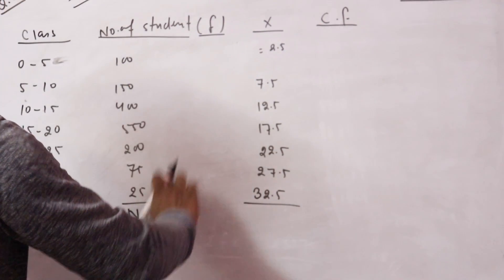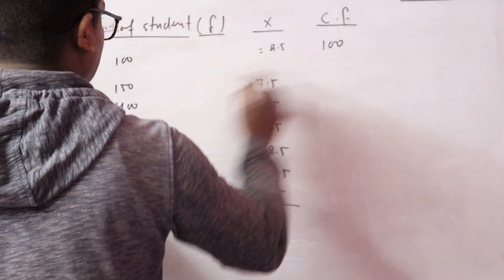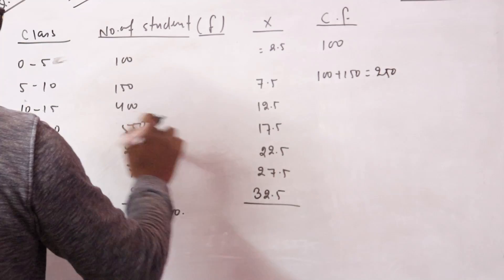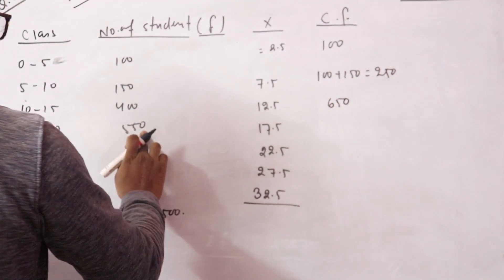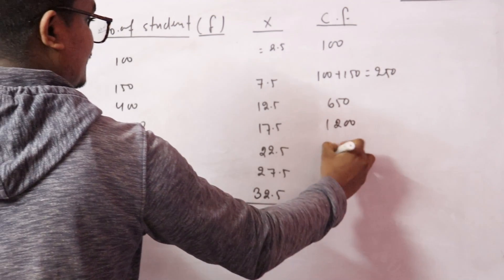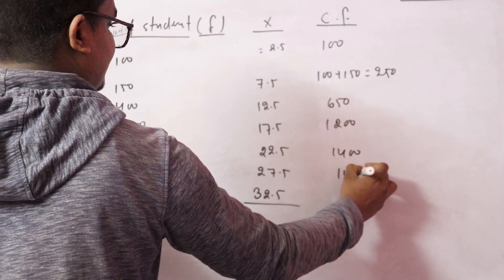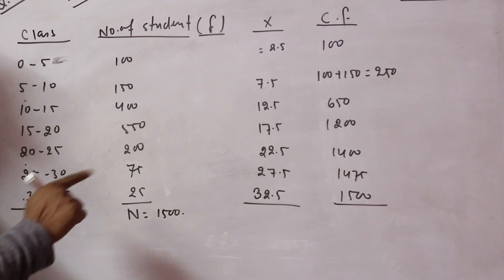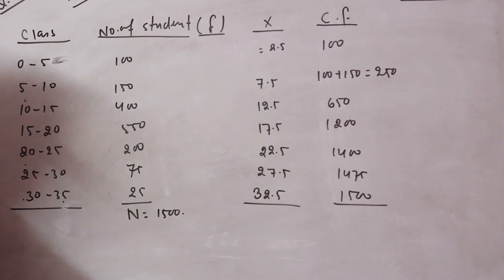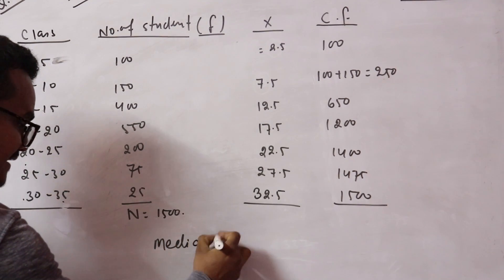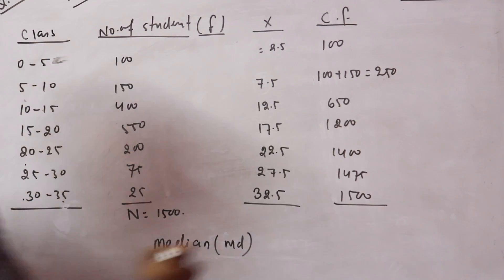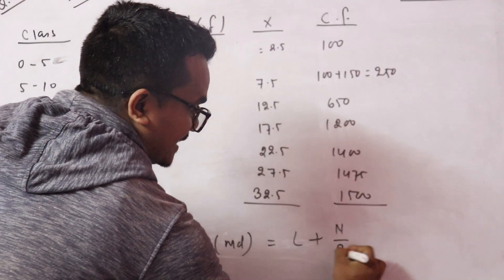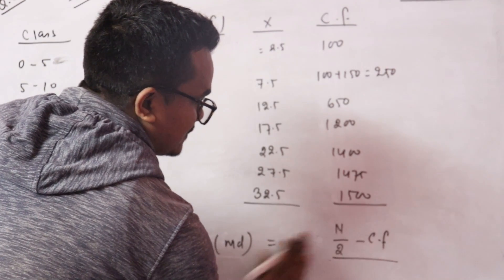CF means cumulative frequency, so we add: 100 first; 100 + 150 = 250; 250 + 400 = 650; 650 + 550 = 1200; 1200 + 200 = 1400; 1400 + 75 = 1475. The solution is median, shortcut md. The formula is L plus... upon F into H, and n/2.